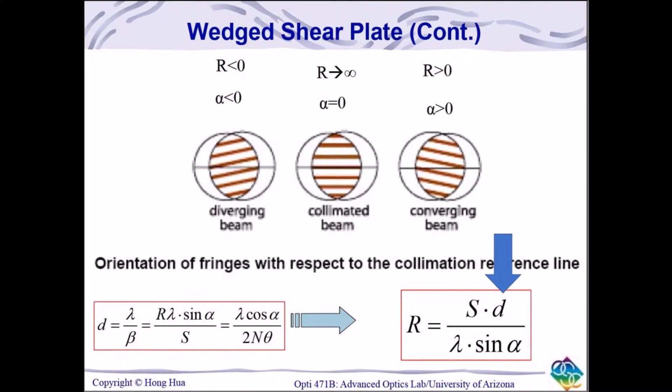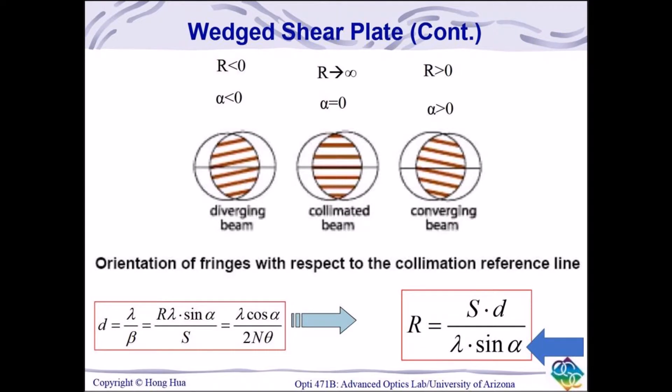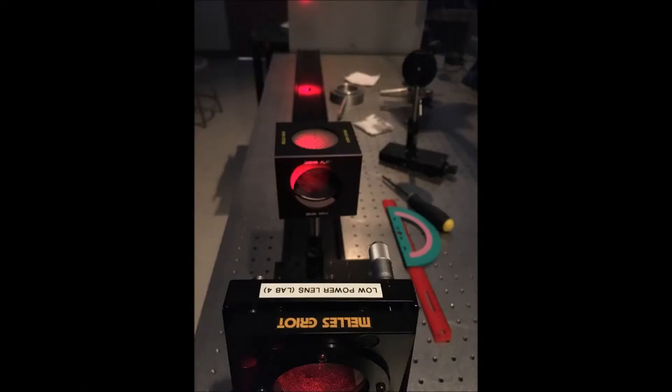Using this equation, we can determine the radius of curvature. S is the shear distance, D is the spacing between fringes, lambda is the laser wavelength, alpha is the fringe angle. With this, we determined that our radius of curvature for our wavefront was 87.3 meters.